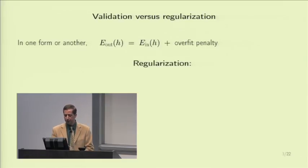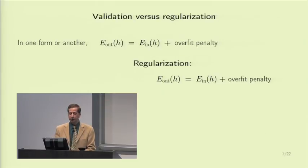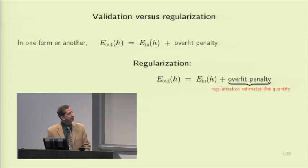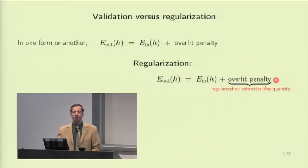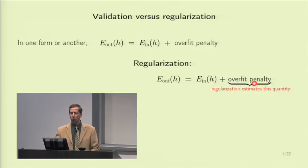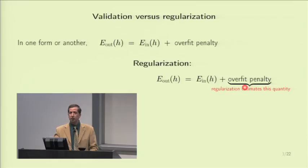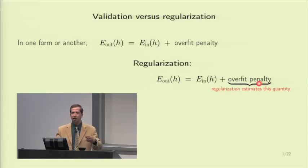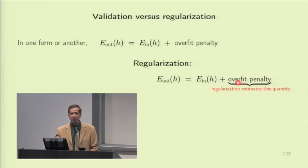To contrast, validation cuts to the chase — it just estimates the out-of-sample error directly. Why bother with the analysis of overfit and penalties? You want to minimize E-out? Let's estimate E-out and minimize it. Obviously it's too good to be true, but it's not totally untrue that validation achieves something in that direction. We noted we are very inaccurate in the regularization choice — we pick lambda, use smooth weights, etc. — but we get a quantity with a monotonic property that when minimized does the job.